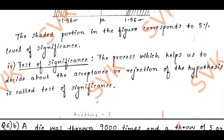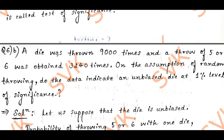Moving on to question number 6b. A die was thrown 9,000 times and a throw of 5 or 6 was obtained 3,240 times. On the assumption of random throwing, do the data indicate an unbiased die at 1% level of significance?